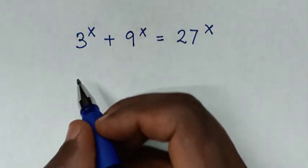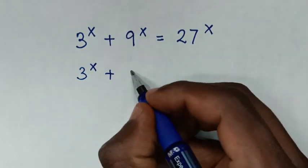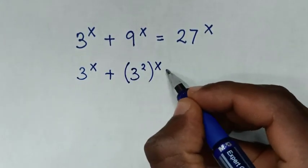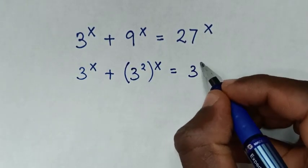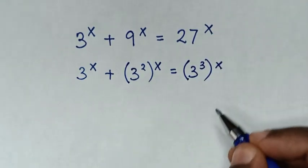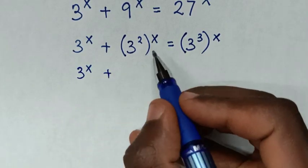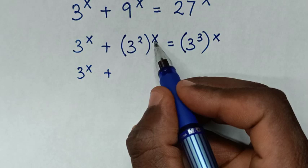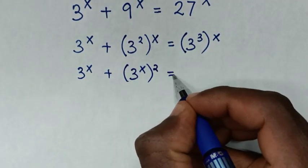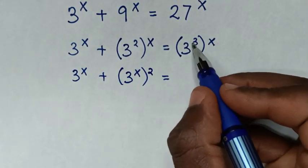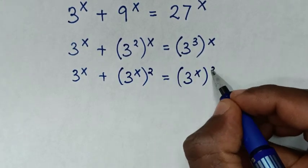So our equation will be 3 power x plus 9 power x. 9 is the same as 3 squared, then bracket power x, is equal to 27 power x. 27 is the same as 3 power 3, then bracket power x. We move the power x inside: 3 power x plus 3 power 2x is equal to 3 power 3x.